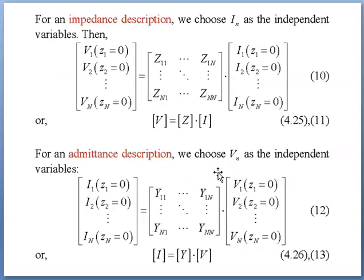Which will give you Vn equals Vn+ plus Vn-, and In equals In+ plus In-. For an impedance description, we are setting In as the independent variable, where [V1, V2, ..., Vn] equals [Z11, ..., Znn] times [I1, I2, ..., In]. Or you have Vn equals Zn times I.